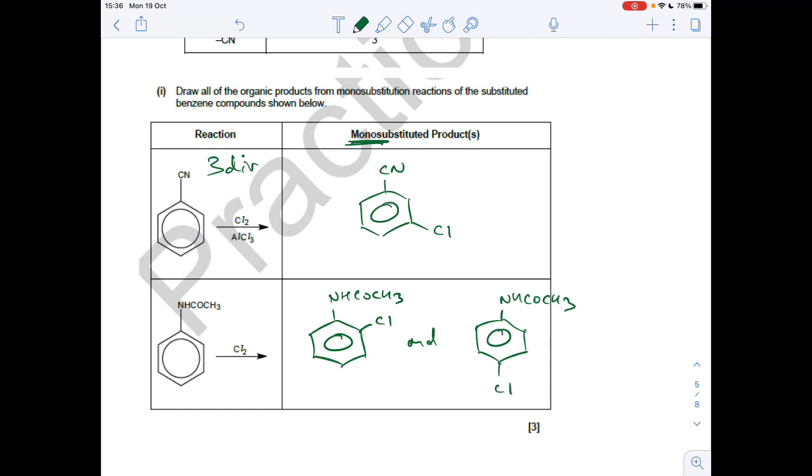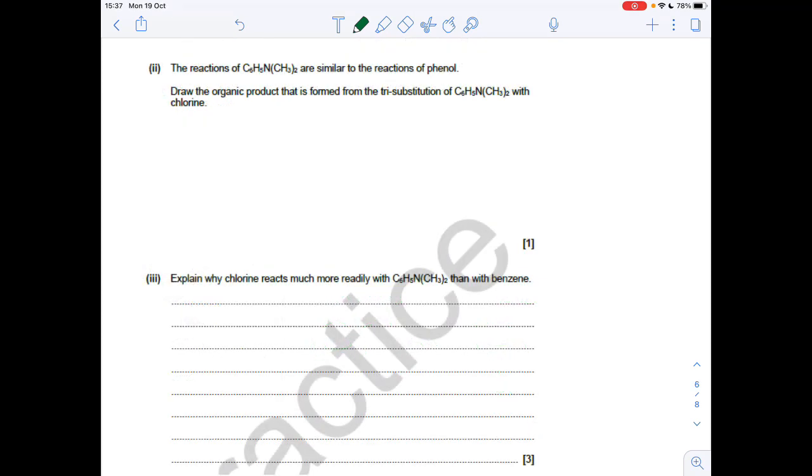But we would also generate the 4 isomer. Which is that one there. The reactions of the C6H5N(CH3)2 are similar to the reactions of phenol. Draw the organic product that's formed from the tri substitution. So if you remember your phenol reactions. When that reacts with bromine. You get 2,4,6 tribromophenol. So that's a specified reaction on the syllabus. So obviously if this compound is reacting with chlorine. We're just going to get the chlorines going at 2,4,6 as well. So that's it there.